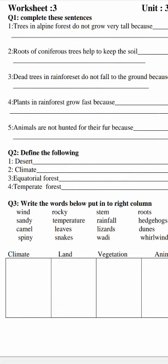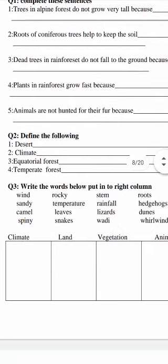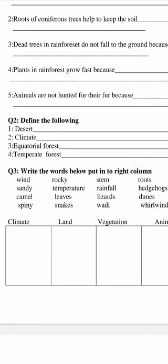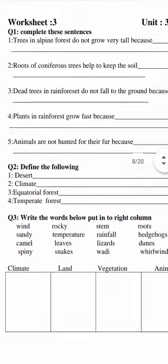Some countries are based entirely on deserts — like Saudi Arabia, which is a desert country that lies almost entirely within the desert. It is one of the most developed countries, and you can see its development. Many facilities have been arranged there, and they have transformed their deserts into a proper system.